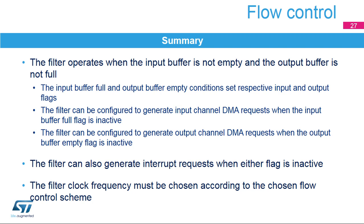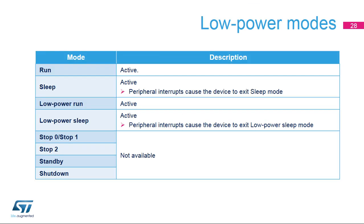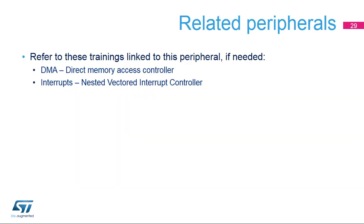The filter clock frequency must be chosen according to the chosen flow control scheme. The FMAC unit is active in run, low-power run, sleep, and low-power sleep modes. It is not available in the other low-power modes. These peripherals may need to be specifically configured for correct use with the FMAC block. Please refer to the corresponding peripheral training modules for more information.